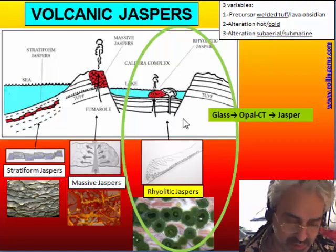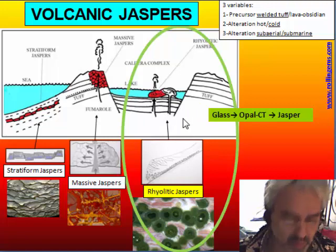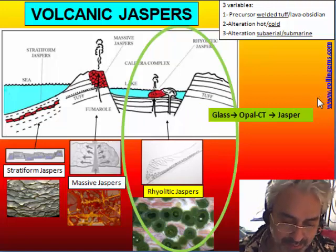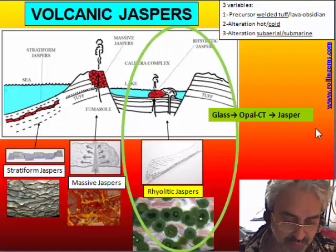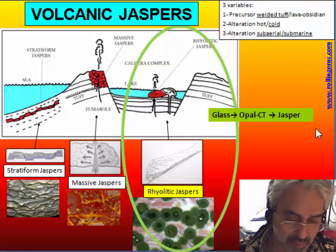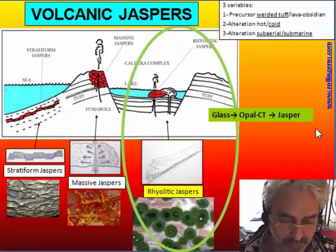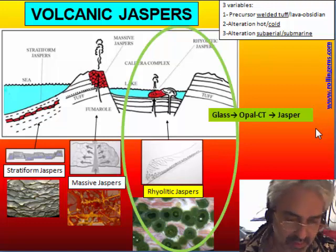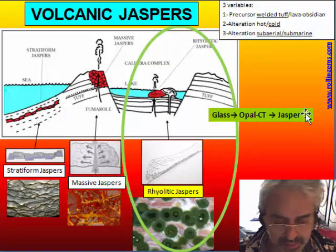There is the possibility to have circulation of hydrothermal water in large quantities, and this water is responsible for putting a lot of silica into circulation. The silica is in the form of glass that is unstable and is transformed — first into opal and then into jasper.